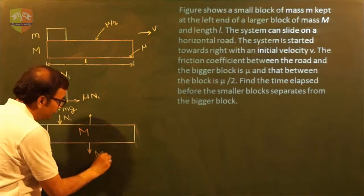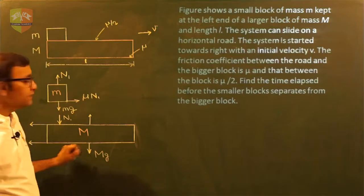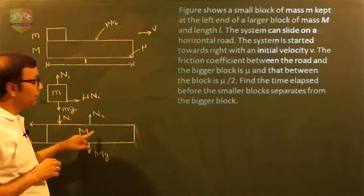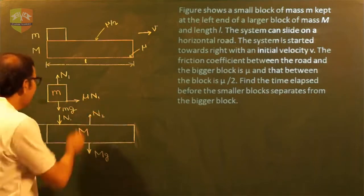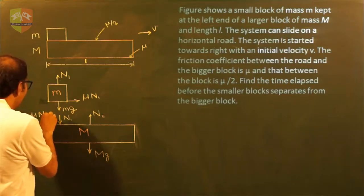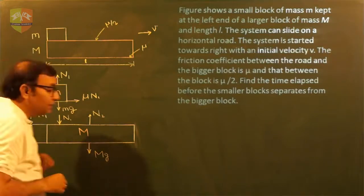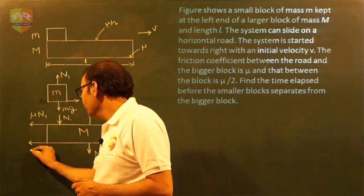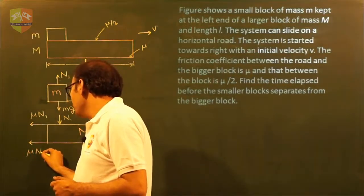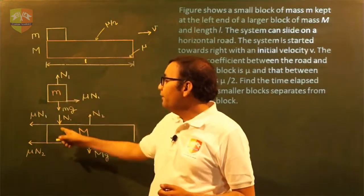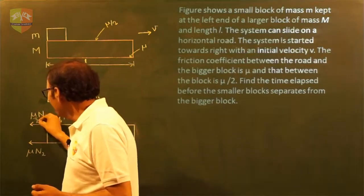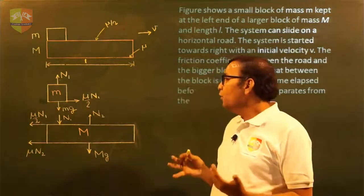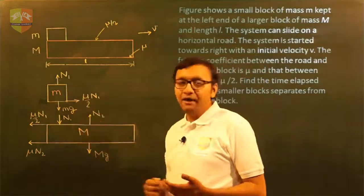For capital M, there is a gravitational force mg downward, normal reaction N2 from the ground, the reaction pair N1 from small m in the opposite direction, and the reaction friction force mu/2 times N1 on the left-hand side. There is also another friction force between capital M and the ground with value mu times N2. We correct the friction coefficient between small m and capital M to mu/2, so all those terms become mu/2 times N1.